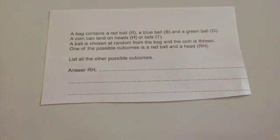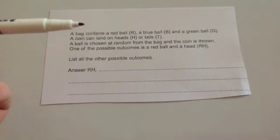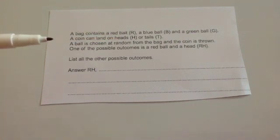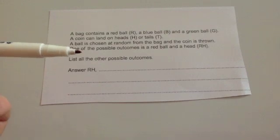Let's do a typical exam question now. A bag contains a red ball, a blue ball, and a green ball. And a coin can land on heads or tails. A ball is chosen at random from the bag, and the coin is thrown. One of the possible outcomes, a red ball and a head, is shown. List all the other possible outcomes.